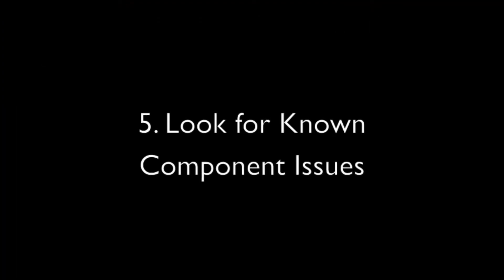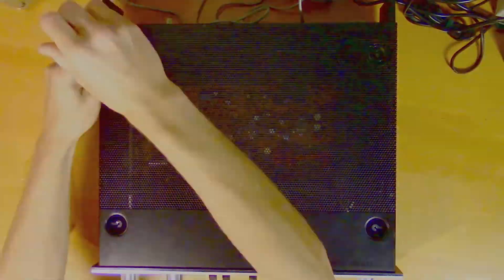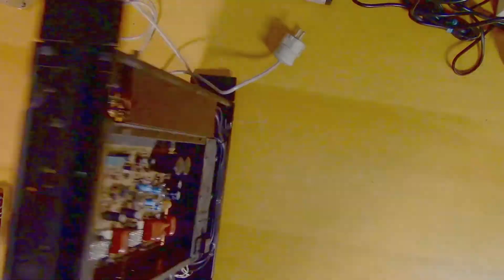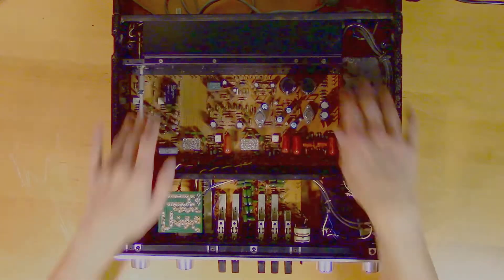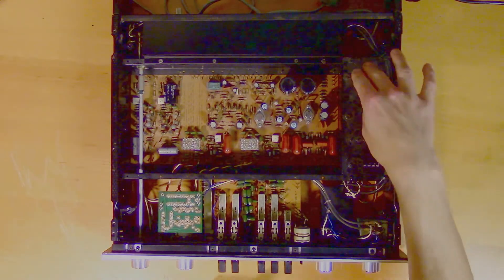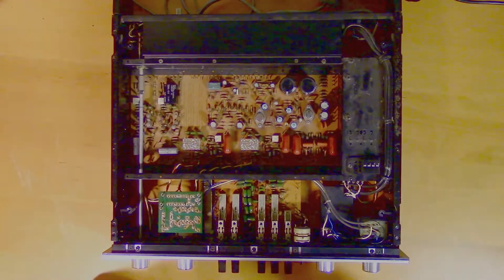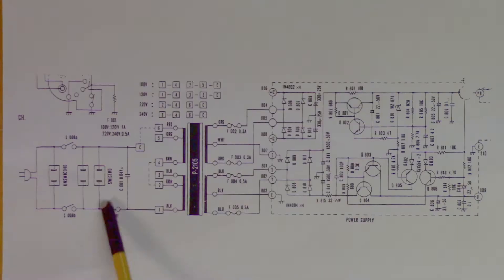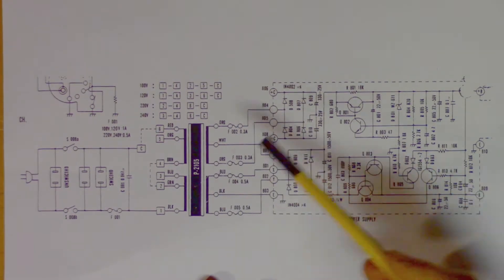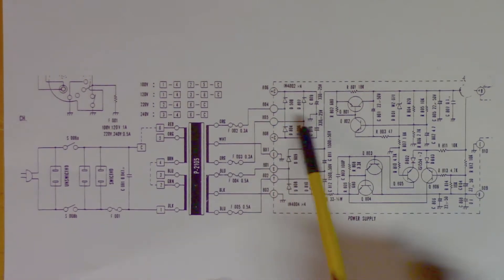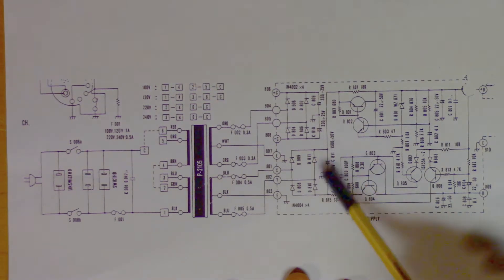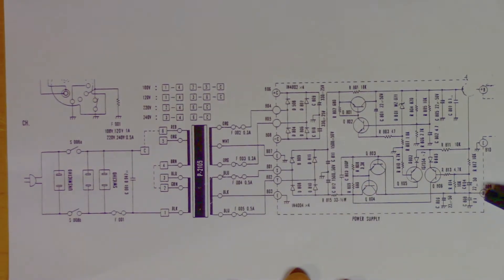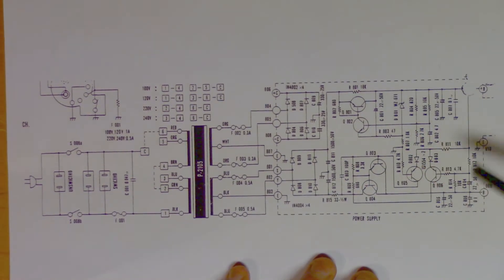Number five: look for known component issues. If you're stuck in a troubleshooting process, it might help to do some research on the components in the circuit. Some components are known to fail in a very non-intuitive way, which can cause really peculiar behavior that is hard to troubleshoot. Being aware of these potentially odd component behaviors might make them easier to track down. In the first Luxman 5C50 repair video, the failure turned out to be a transistor in the power supply regulator that had a known flaw to turn noisy with age, which in this case caused the power supply to be unstable.